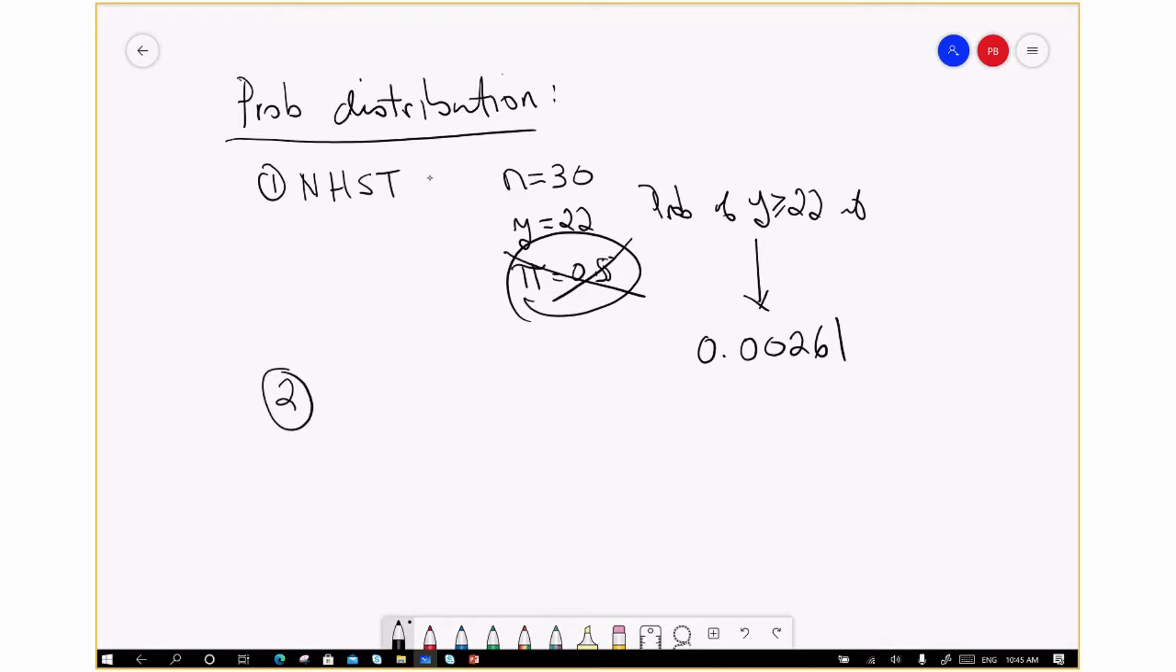A second thing we might have done was make a 95% confidence interval, but we're not going to do that in this section or in this course.